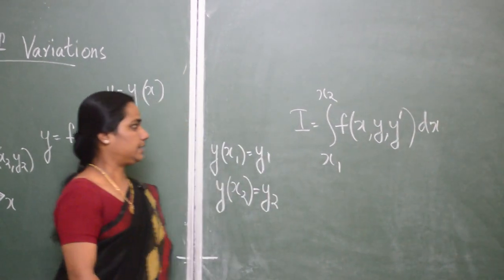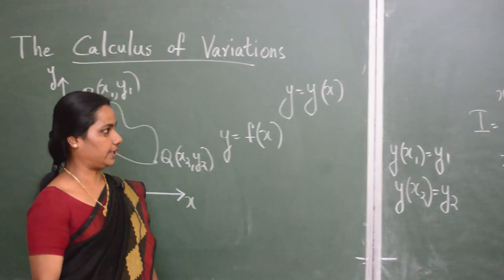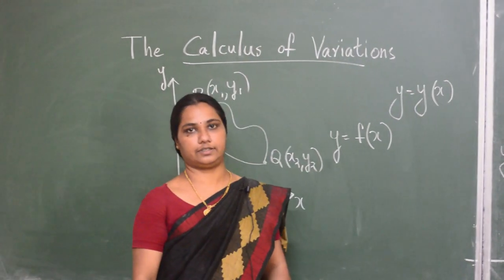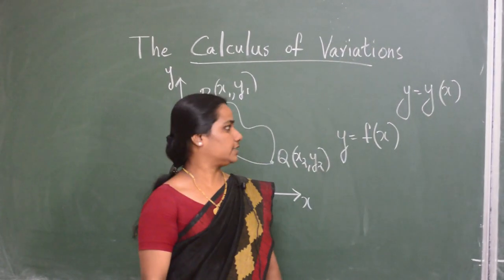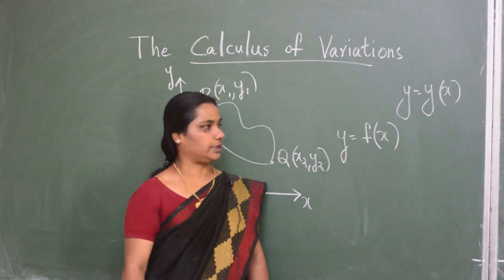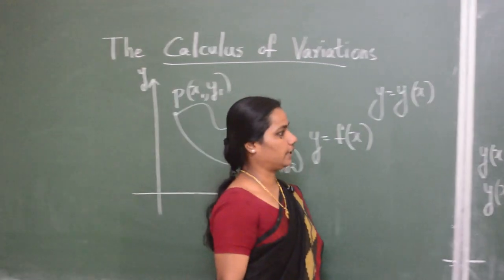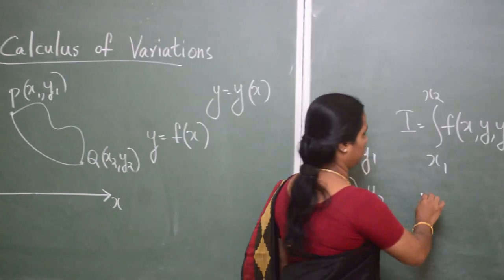So now let us try to find the function f of x, y, y dash in the above three stated problems. In the first problem, we are trying to minimize the length of the arc. Therefore, from the formula for length of the arc, in the first problem,